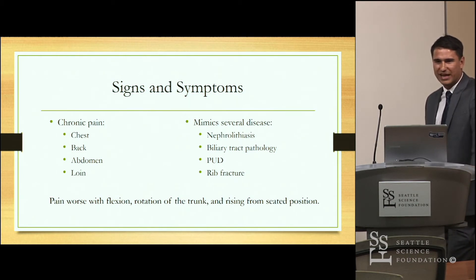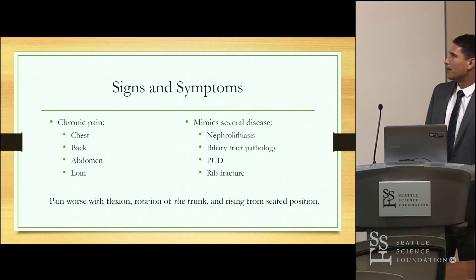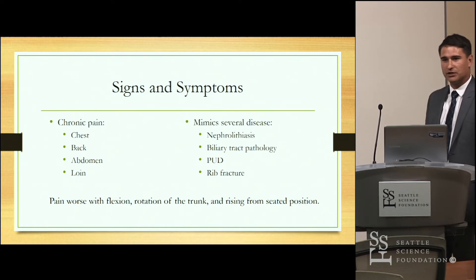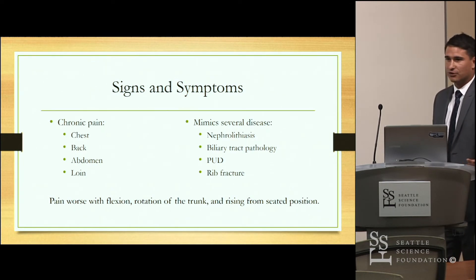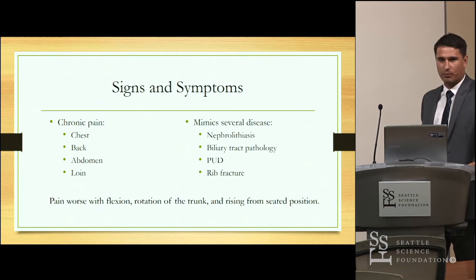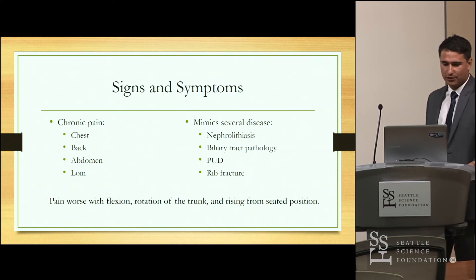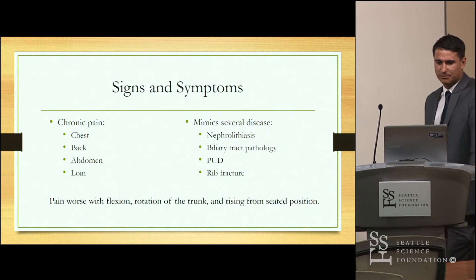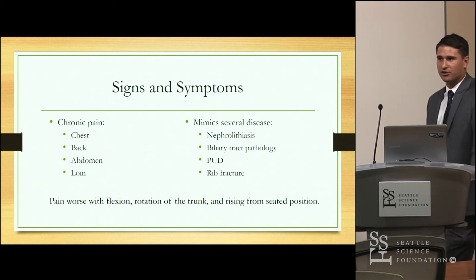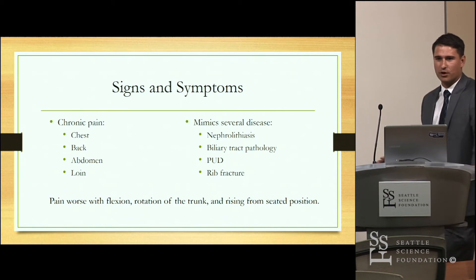The presentation of 12th rib syndrome is what makes it so difficult to diagnose. The patient typically presents with chronic pain lasting months or years, which can vary anywhere from the chest to the back, abdomen, or groin. It mimics many diseases such as nephrolithiasis, biliary tract pathology, peptic ulcer disease, or rib fractures. All these must be excluded before you can diagnose 12th rib syndrome, because you don't want to miss something major.